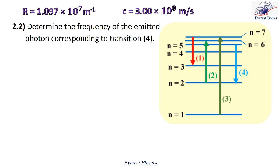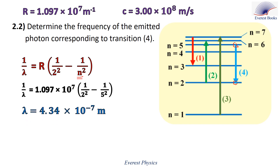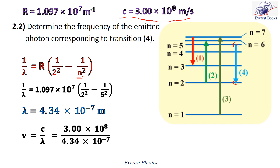Part 2.2: determine the frequency of the emitted photon corresponding to transition 4. Using the Rydberg formula, transition 4 goes from N = 5 to N = 2. Replacing N by 5 gives lambda = 4.34 × 10⁻⁷ m. The frequency of the emitted photon equals c over lambda, where c is the speed of light in vacuum. Replacing c and lambda by their values gives ν = 6.91 × 10¹⁴ Hz.